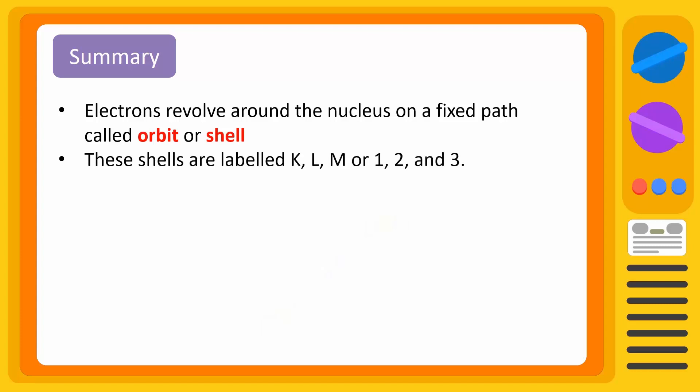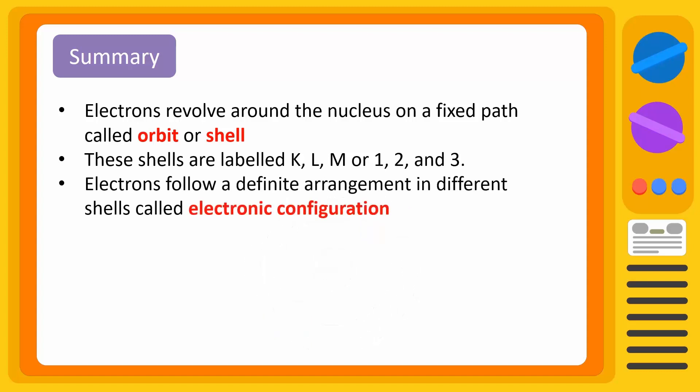Today, we have learnt that electrons revolve around a nucleus on a fixed path called orbit or shell. These shells are labelled as K, L, M or 1, 2, 3. Electrons follow a definite arrangement in different shells. This pattern is called electronic configuration.